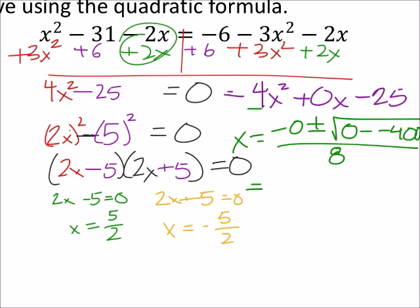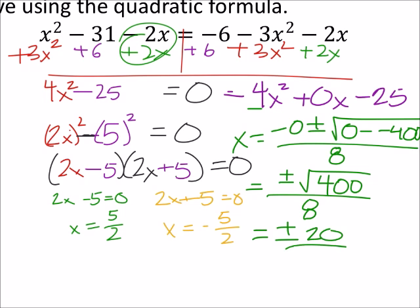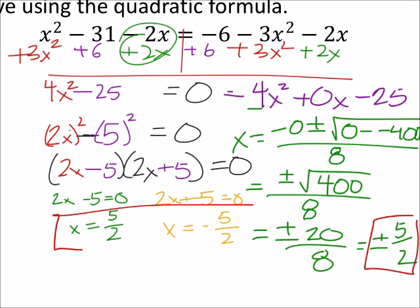So, this ends up being the positive or negative of, that would be now positive 400 over 8, and it's a plus or minus of 20 over 8, which is the same as the plus or minus of 5 halves, which is what we found as well. So, that is with the quadratic formula, this is without it.